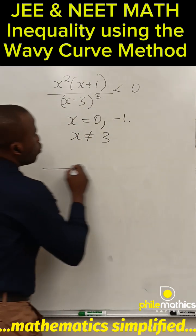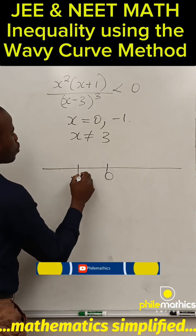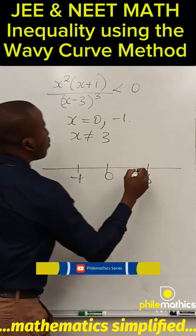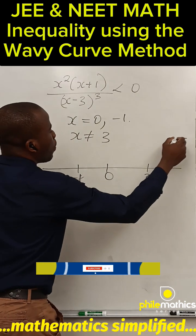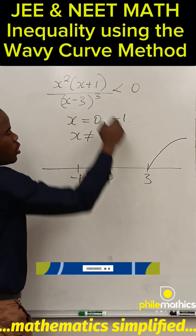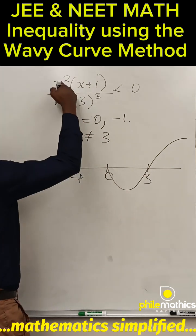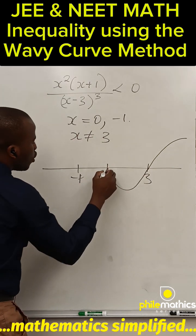So we'll draw the number line. We have zero, we have minus one, and we have three. Starting from the top right at three, the power is odd so it crosses. At zero it is even, it doesn't cross.